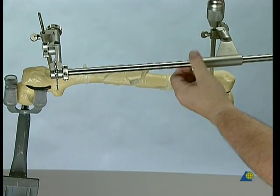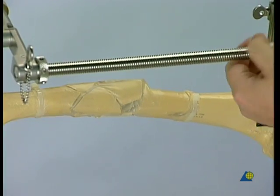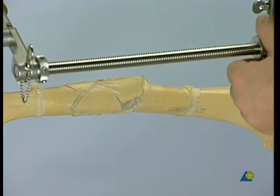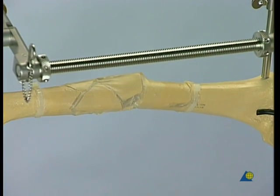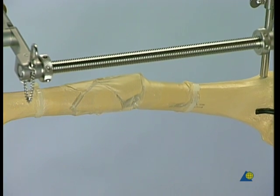Distracting the fracture causes the soft tissue cover to narrow. This plays a significant role in the reduction of the fracture. Since considerable force may be required, the pin wrench is used.